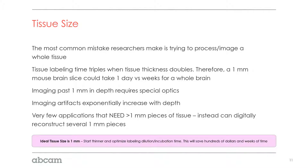What most researchers do is start way too large with the tissue. They spend weeks trying to optimize with antibody labels and hundreds if not thousands of dollars on labels trying to get them to label a large tissue. The problem is that tissue labeling time triples when tissue thickness doubles. Therefore, we suggest taking tissues such as a mouse brain hemisphere and slicing into one-millimeter thick pieces for imaging and processing.